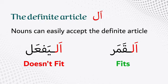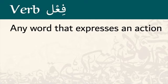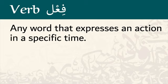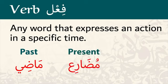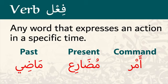Let's now move to the second part of speech: verb. A verb is easy enough to define — it's any word that expresses an action at a specific time. Verbs are classified into three main categories: past (madi), present (mudari'), and command (amr). What about the future? How can we talk about future in Arabic? We will know about that in a moment.